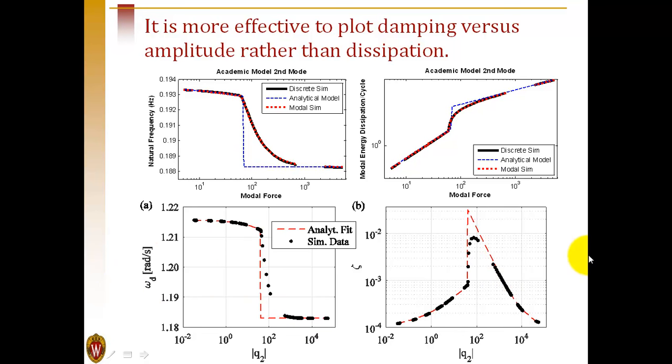In this figure, it's very clear to see that the damping tends toward the material damping, which we said is 10 to the minus 4 in these simulations. It shows a power law behavior in this region, and then we go into macroslip and see the macroslip behavior at high forces or high amplitudes.